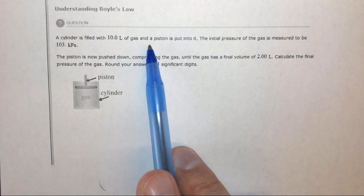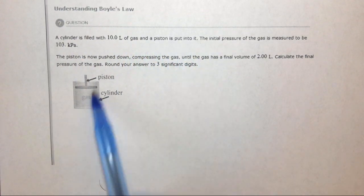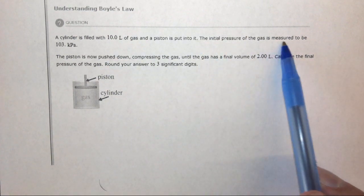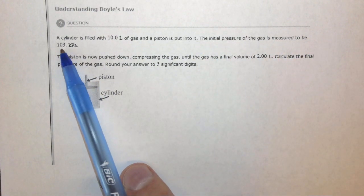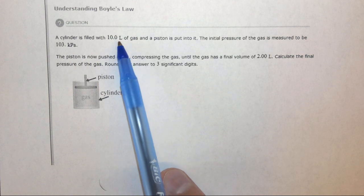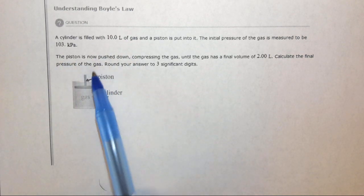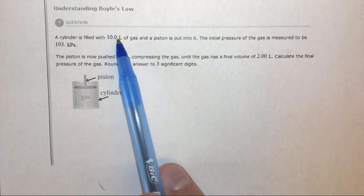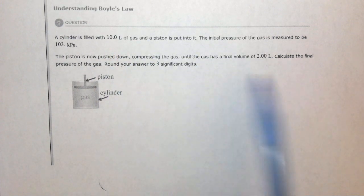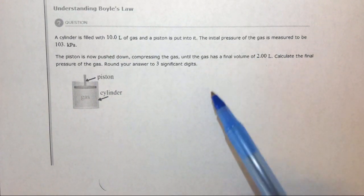This question says a cylinder is filled with 10 liters of gas and a piston is put into it. The initial pressure of the gas was measured to be 103 kilopascals. We then push the piston down to make the volume go from 10 liters to 2 liters, and we want to know the final pressure of the gas.